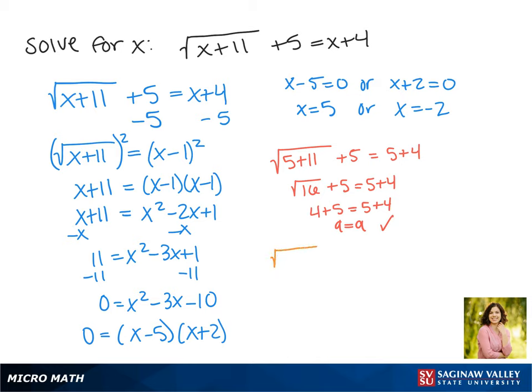Now we're going to test negative 2 by plugging it back in. We get the square root of 9 plus 5 equals negative 2 plus 4. That becomes 3 plus 5 equals negative 2 plus 4, and 8 does not equal 2. So negative 2 is an extraneous solution. Our solution to this equation is x equals 5.